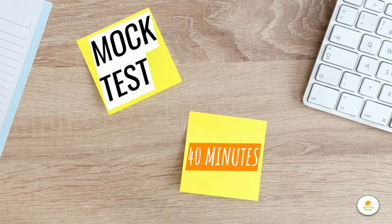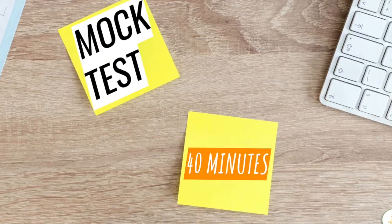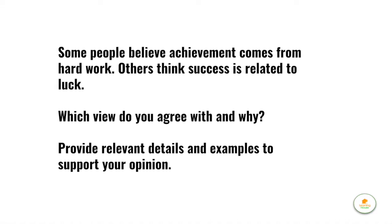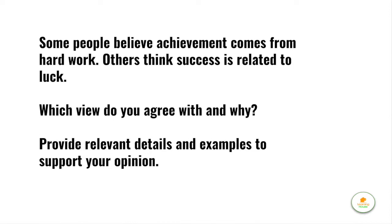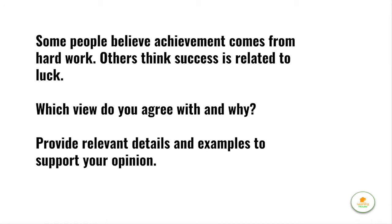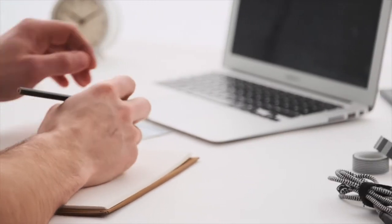You can practice at home by walking through the steps discussed. Take 40 minutes to read the prompt, understand what it's asking, make notes, and create your outline. For example: 'Some people believe achievement comes from hard work. Others think success is related to luck. Which view do you agree with and why? Provide relevant details and examples to support your opinion.' Think about other words for achievement or luck — you can use thesaurus.com. Then think what kinds of details or examples from your own knowledge, experience, or reading can reinforce the point you're making.